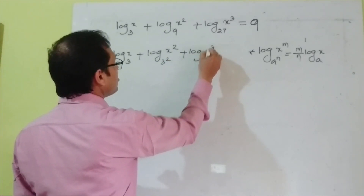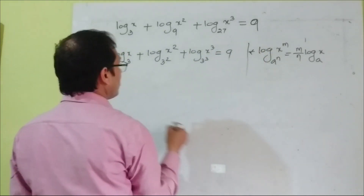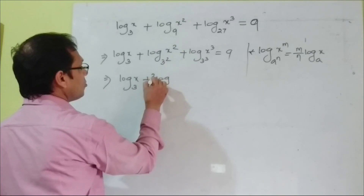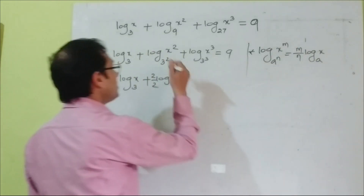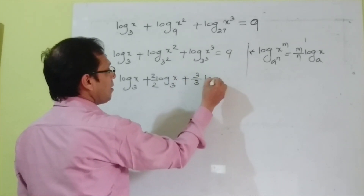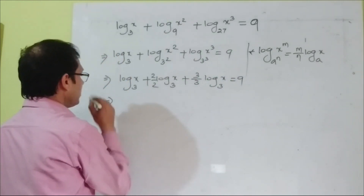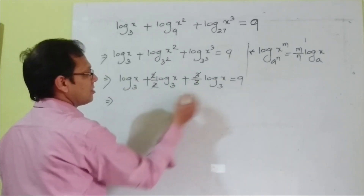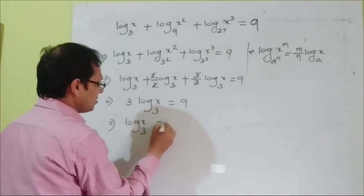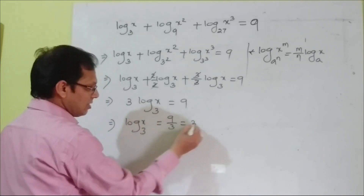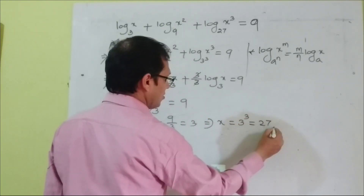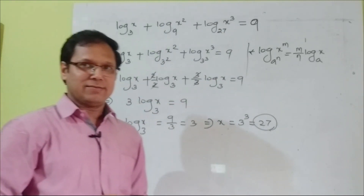Applying the rule: log x to base 3 plus (2/2) log x to base 3 plus (3/3) log x to base 3 equals 9. Since 2/2 = 1 and 3/3 = 1, we get log x to base 3 plus log x to base 3 plus log x to base 3, which is 3 log x to base 3, equals 9. So log x to base 3 equals 3, meaning x equals 3³ = 27. The answer is x = 27.